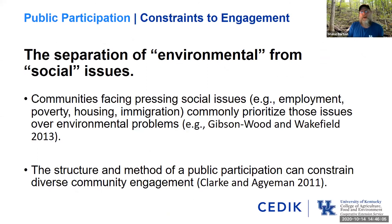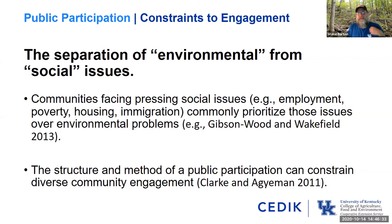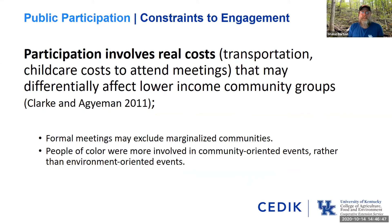One of the reasons we've gotten where we are is that we often separate environmental issues from social issues. If you're familiar with Maslow's hierarchy of needs, when a community is facing tough challenges — employment, housing, poverty — environmental problems tend to go to the wayside. They are not prioritized unless we're talking about a direct impact to the drinking water supply. Thinking about how to connect environmental issues to broader social issues can pay dividends in building stakeholders. We also have to acknowledge that participation in traditional ways costs real money — transportation to a meeting, child care — and that disproportionately impacts people of lower incomes. Formal meetings carry formal challenges to marginalized communities.